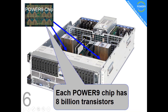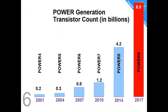Fact number six: each of the Power 9 chips has eight billion transistors. Is that a lot? Looking at history, it is double the number of transistors compared to Power 8, and seven or eight times faster than the previous generations.